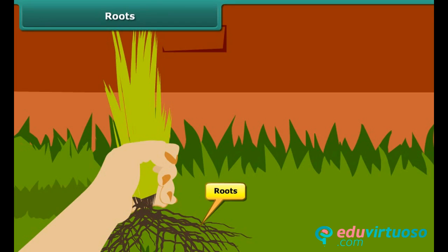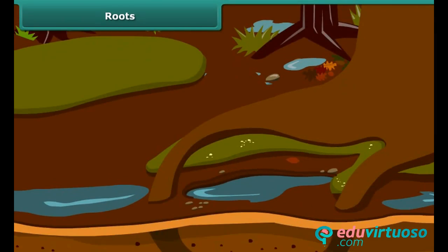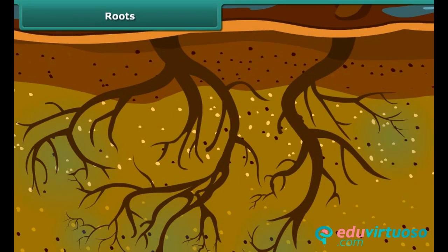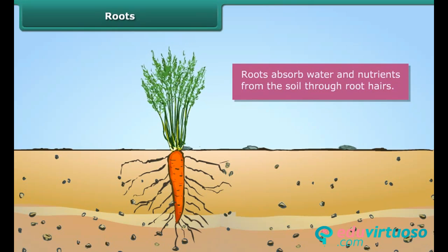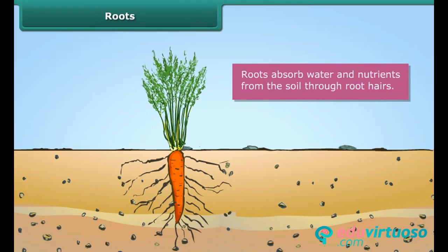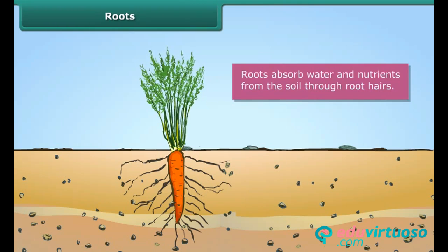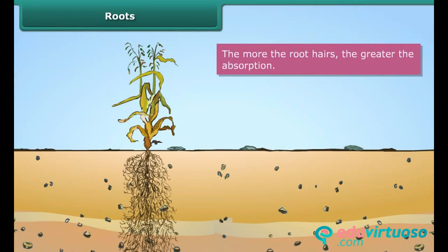All plants have roots. Roots play a crucial role in providing water and nutrients to the other parts of the plant body. Roots have hairs. Roots absorb water and nutrients from the soil through these hairs. The more root hairs a plant has, the greater the absorption.